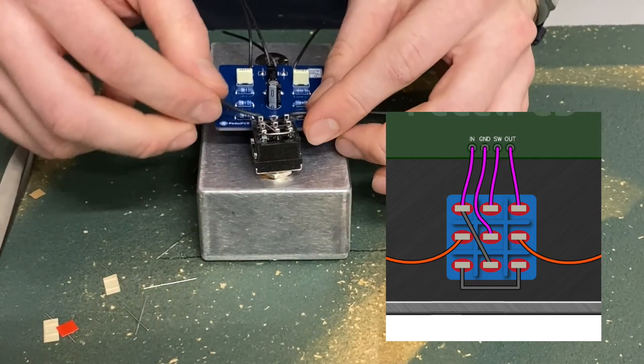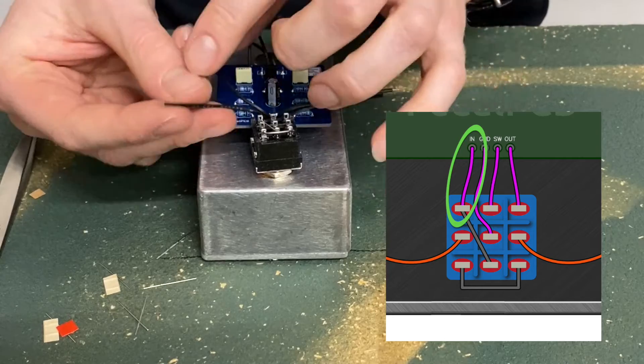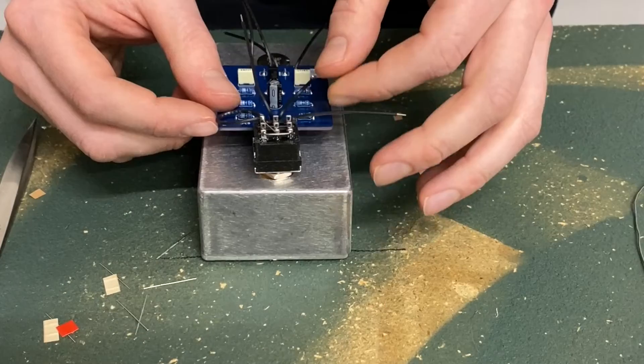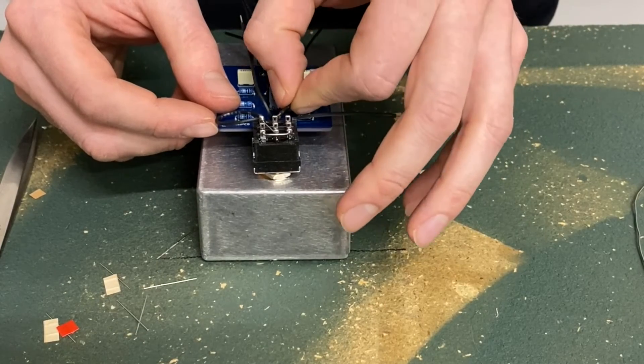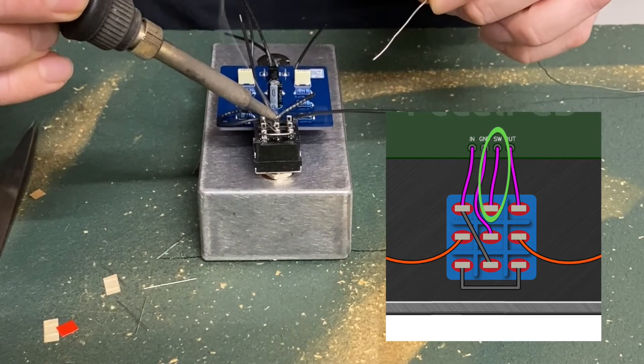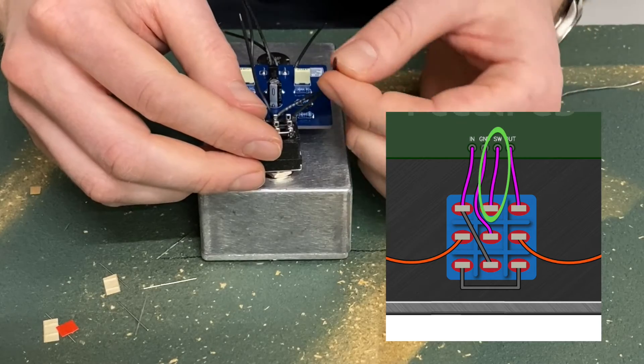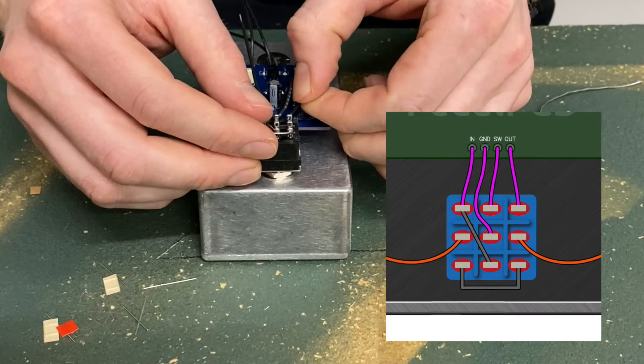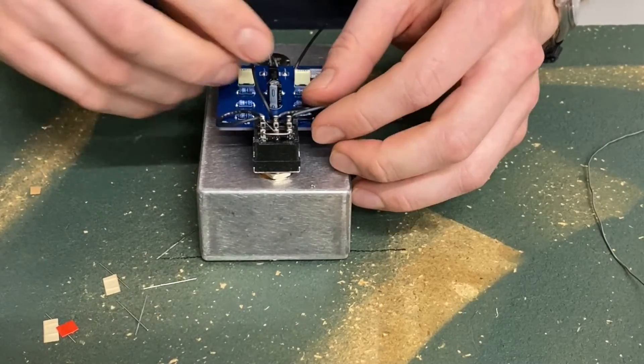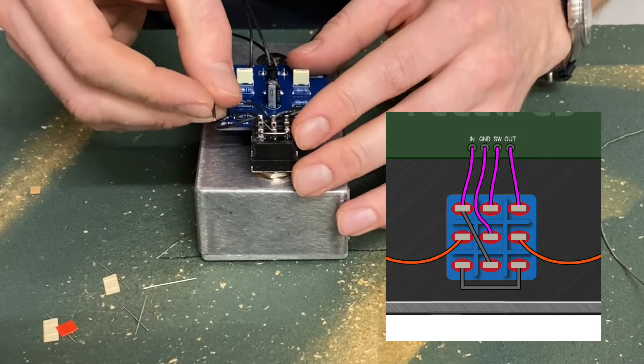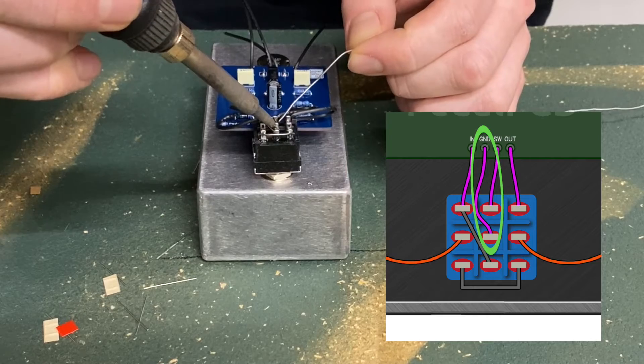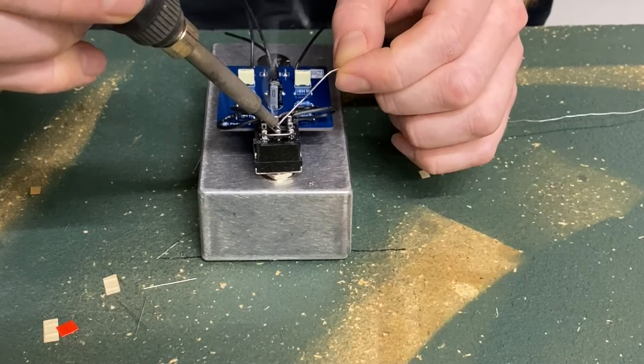Now, take the wire from the pad labeled IN and run it to this lug with the unsoldered jumper wire. Solder them all in. Next, take the wire from the pad labeled SW. This wire connects the LED when the pedal is on. Solder it into this lug here. Following the same pattern, take the wire from the pad labeled OUT and solder it into this lug here. Now, take the ground wire from the pad labeled GND and run it to this lug in the middle. Solder it in and be careful not to melt other wires nearby.